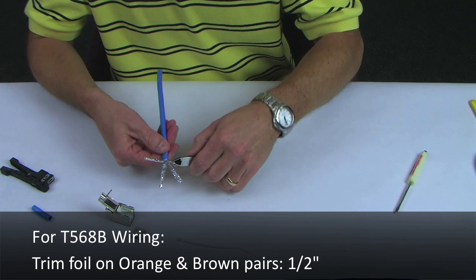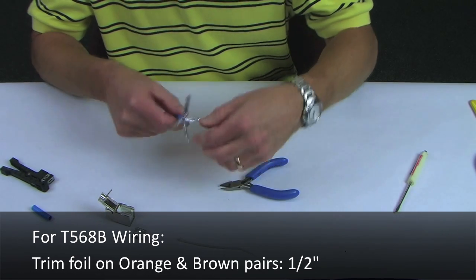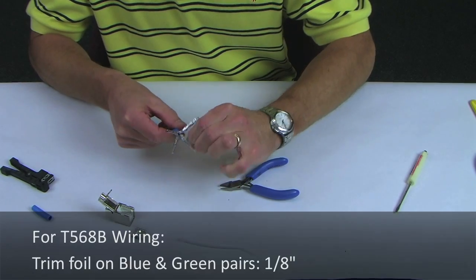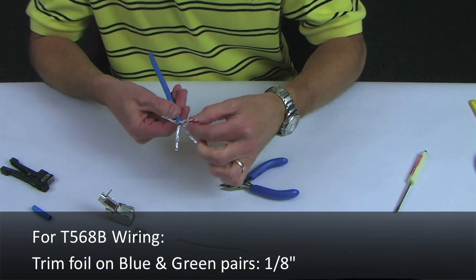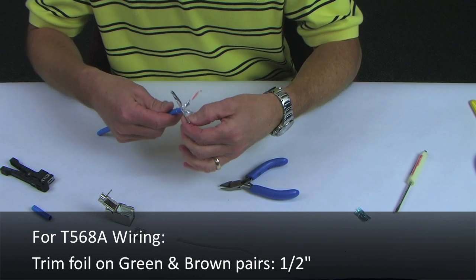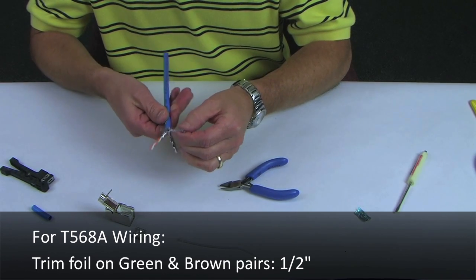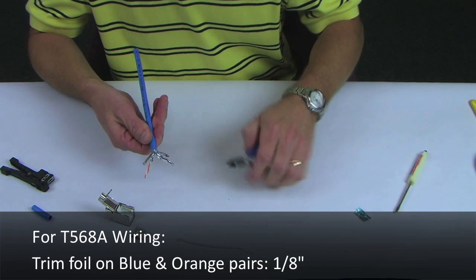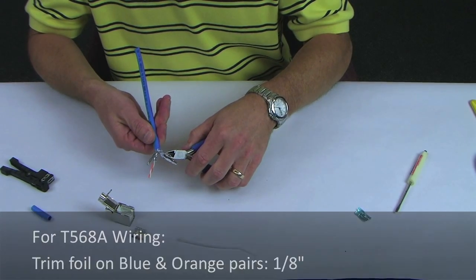For T568B wiring, trim the foil on the orange and brown pairs to one half inch from the cable jacket. Trim the foil on the blue and green pairs to one eighth inch. For T568A wiring, trim the foil on the green and brown pairs to one half inch and the blue and orange pairs to one eighth inch.